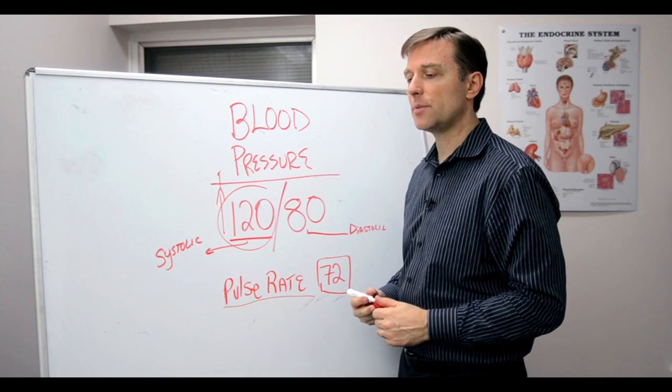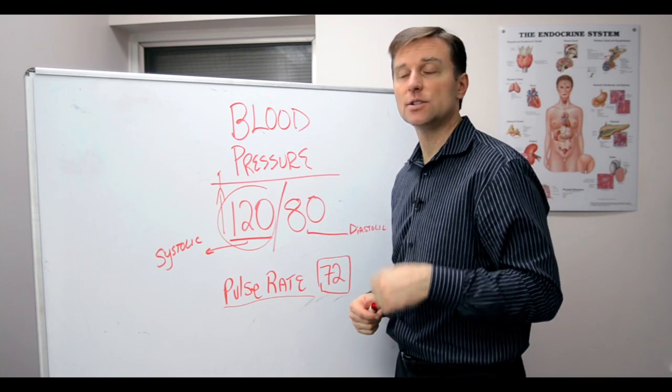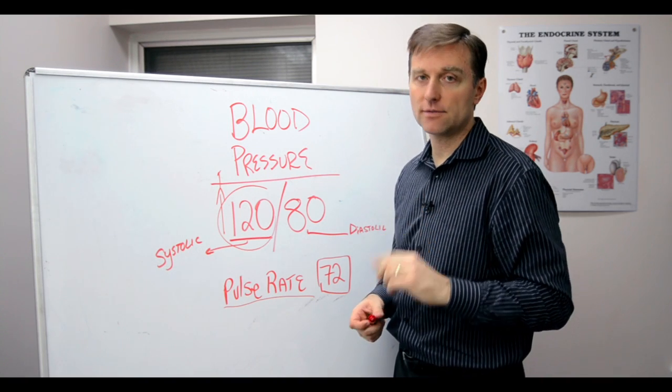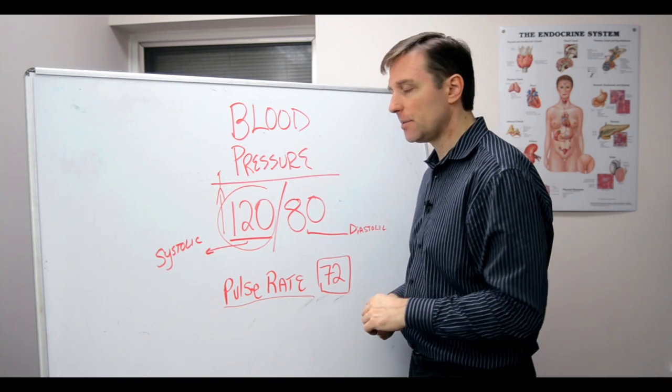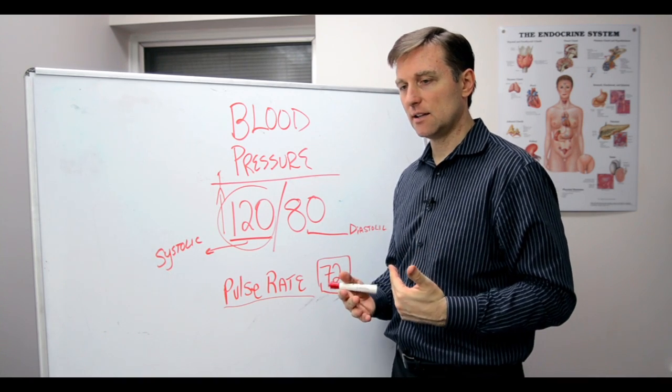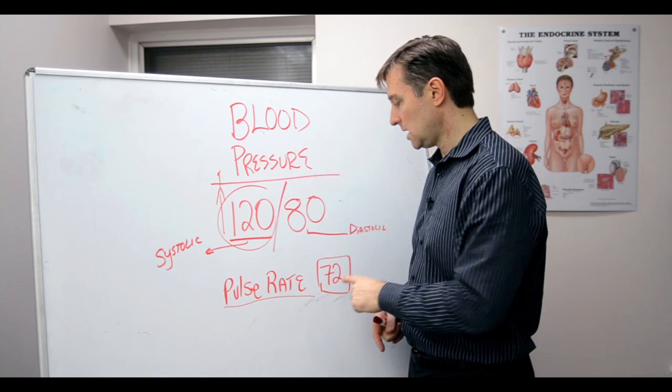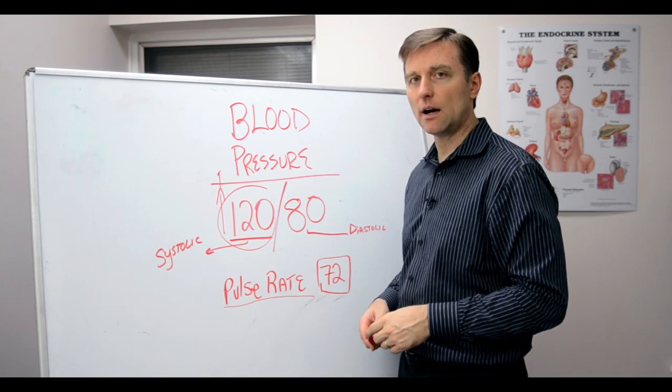The more fit the person is, it should go down to 60, 50, maybe even 40. But if the person is not exercising, and they're kind of overweight, and it's low, that means it's a weak heart.